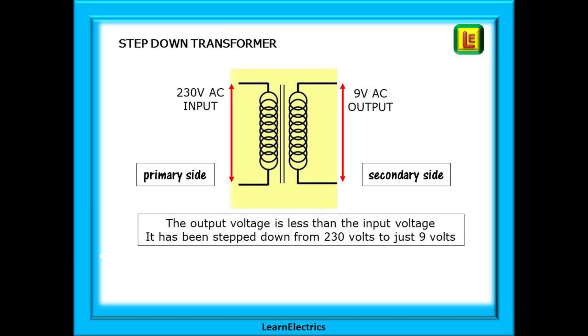We are using a step down transformer. In other words we are stepping down or reducing the input voltage from a higher voltage to a lower output voltage. The 230 volt input side is called the primary winding and the 9 volt output is the secondary winding.